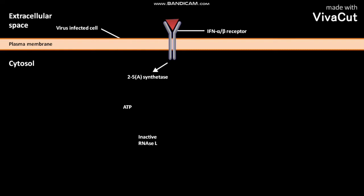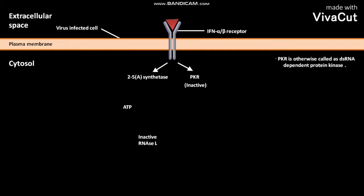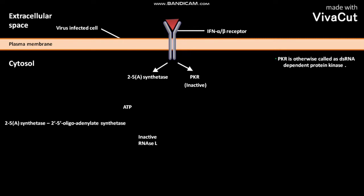The JAK-STAT pathway induces transcription of several genes and produces many mRNAs. One mRNA undergoes translation to produce 2'5'A synthetase. This binding also induces the production of PKR in its inactive form. PKR is otherwise called dsRNA-dependent protein kinase.